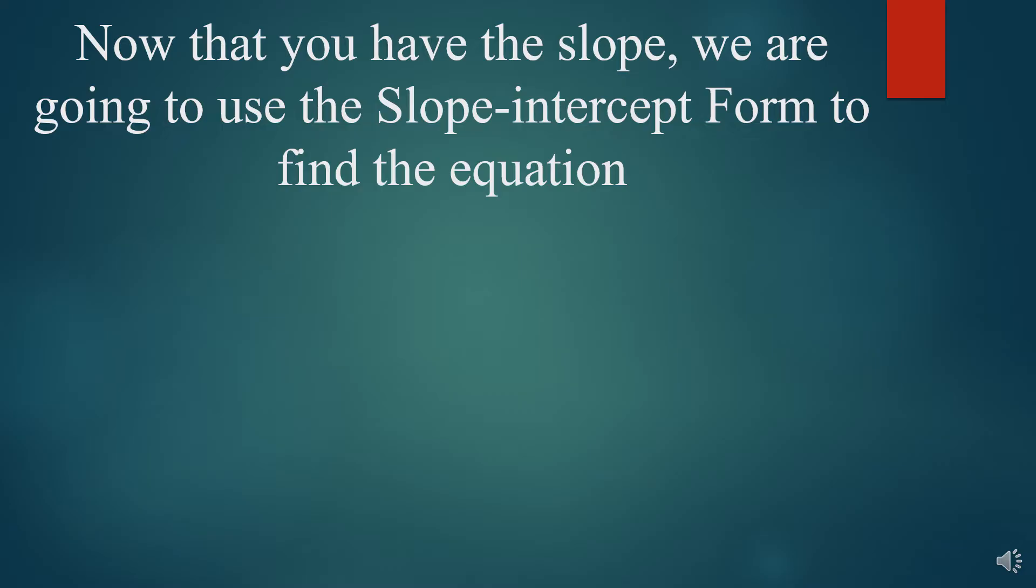Now you have the slope. What we're going to do now is we're going to use the slope-intercept form. y equals mx plus b is the generic form of the slope-intercept form, and so if you probably recall, the m is the slope, and the b is the y-intercept. So we have to find the m and the b in order to complete this equation. Now, we already have the m. We have the slope. We found it. It was 3, and so we're going to put 3 in the place of m. So now we have y equals 3x plus b.